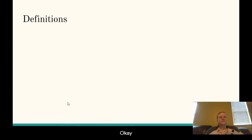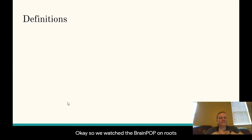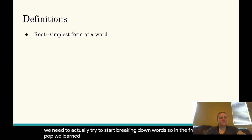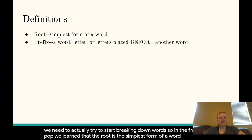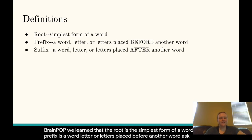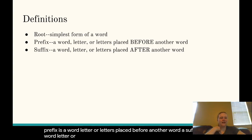We watched the BrainPop on roots, prefixes, and suffixes. Now we need to actually try to start breaking down words. In the BrainPop, we learned that the root is the simplest form of a word. A prefix is a word, letter, or letters placed before another word. A suffix is a word, letter, or letters placed after another word.